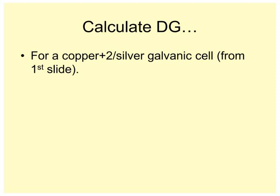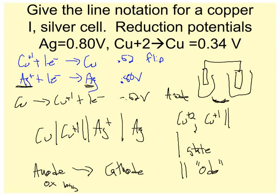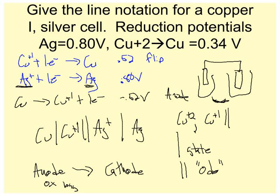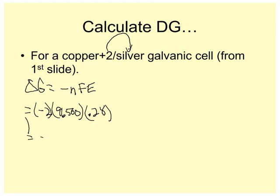Calculate delta G for a copper two silver galvanic cell from the first slide. So delta G equals negative NFE. I think I figured out the E before. 0.80 and negative 0.52 is 0.28. So my voltage, my E naught, is 0.28. Faraday's are 96,500. And I had copper two and silver, so the least common multiple is two. Throw in a negative sign right there. Negative two times 96,500 times 0.28, the answer is negative 54,040 joules, or 54 kilojoules. Isn't that nifty?